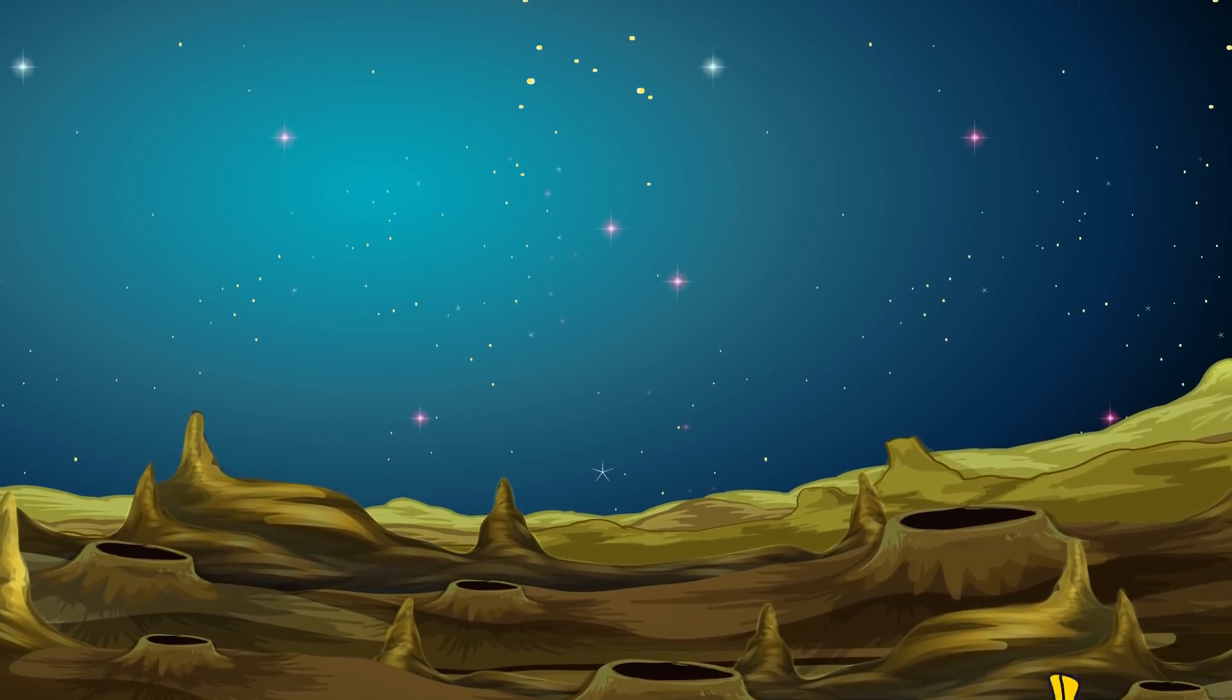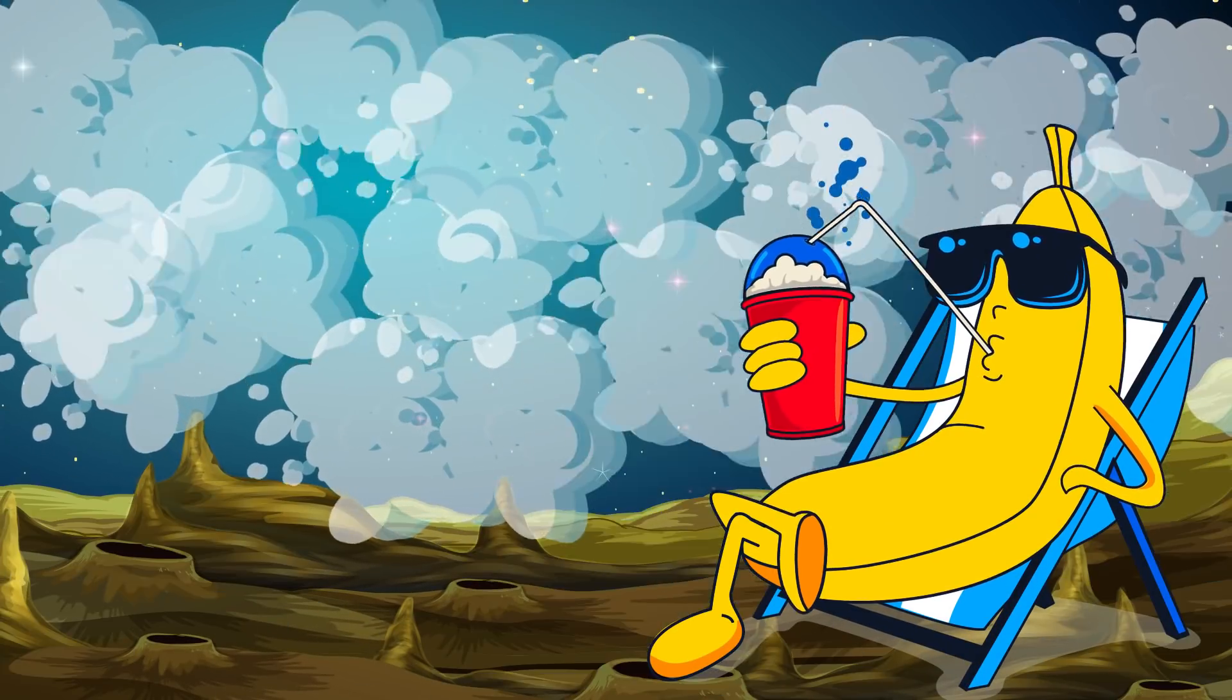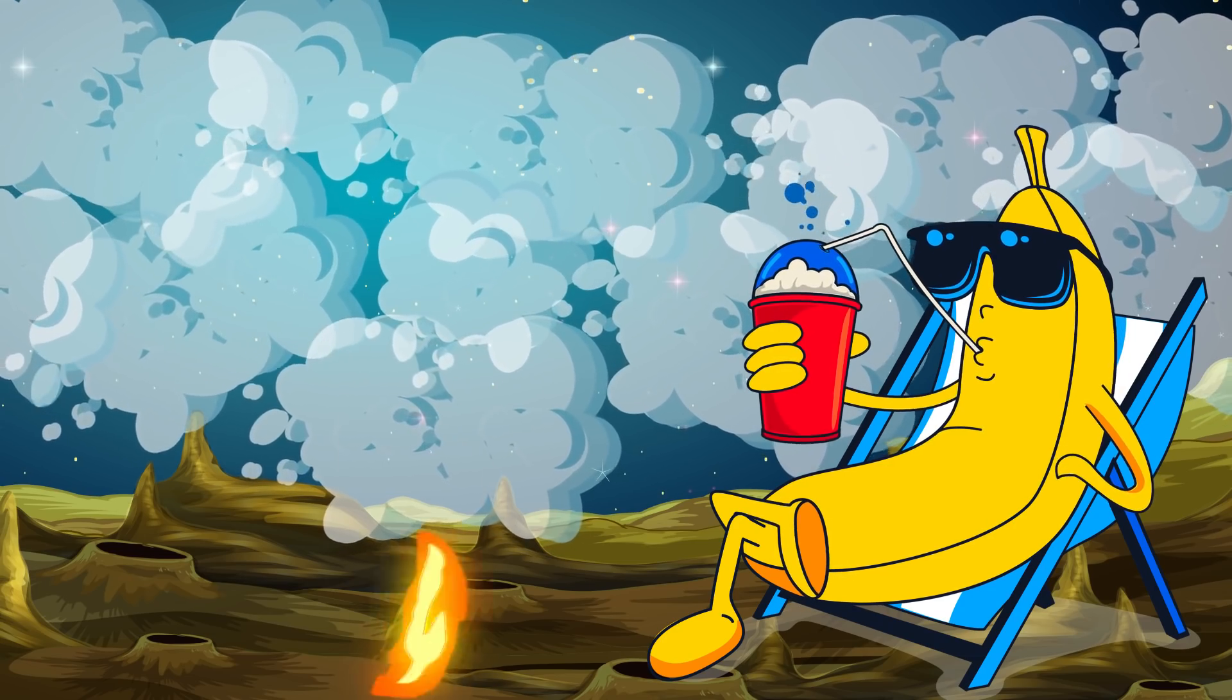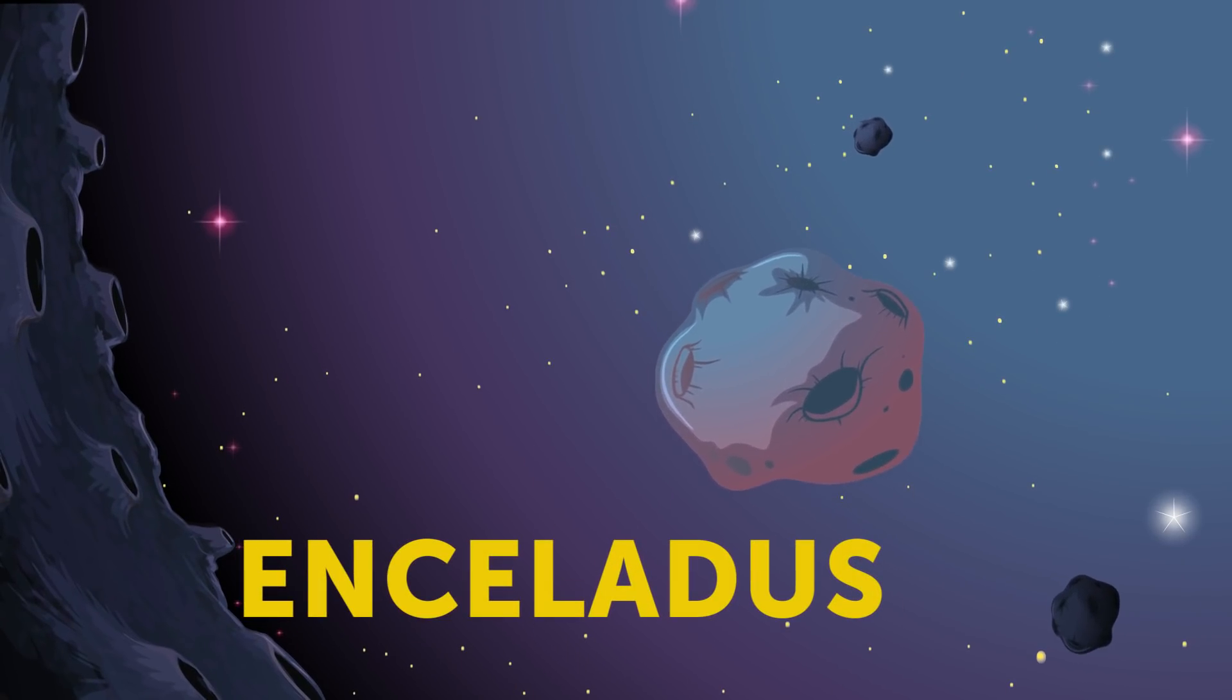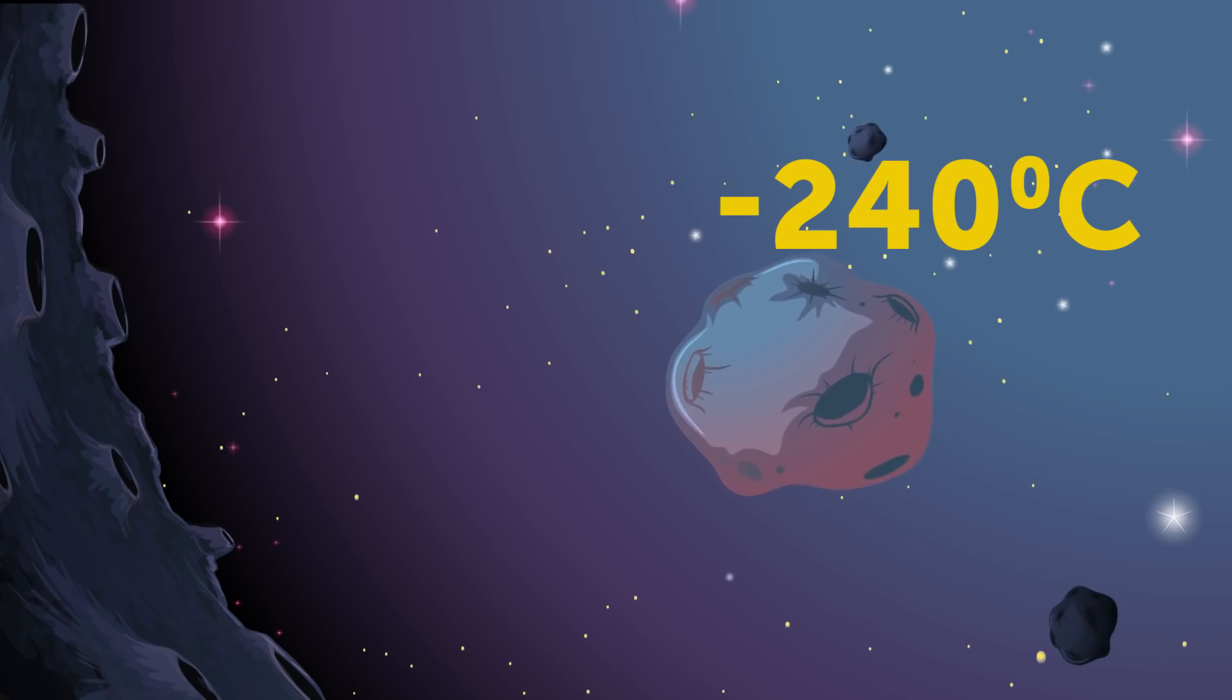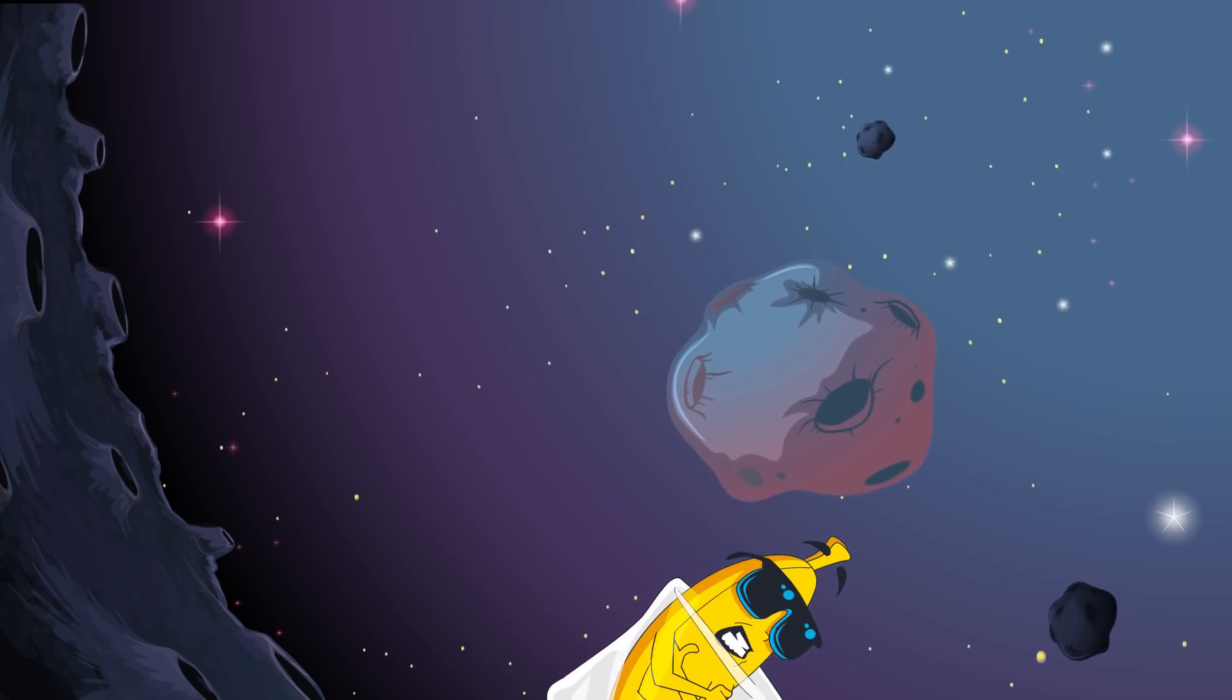However, such a low temperature may seem like paradise due to the presence of a dense methane atmosphere on Titan, which does not allow the temperature to fall even lower. So the temperature on the nearest neighbor of Titan, Enceladus, is negative 240 degrees Celsius due to the almost complete absence of an atmosphere on this ice bevel.